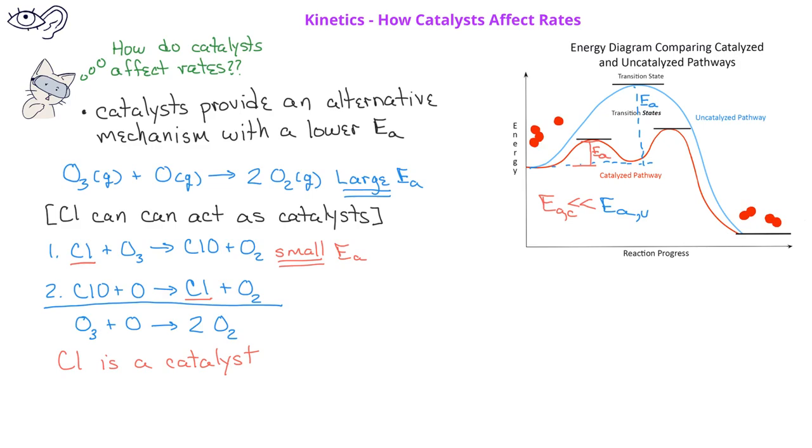When we look at this mechanism, we can also identify an intermediate. This is useful to distinguish between a catalyst and an intermediate. Recall that a catalyst is used in an early equation and reproduced in a later equation, whereas the reaction intermediate is formed in an earlier step.